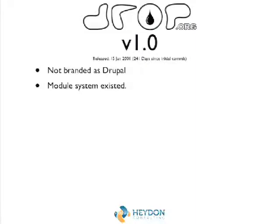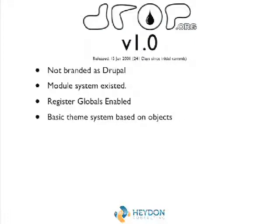Drupal 1 had the current module system that we've had right through to Drupal 7 — it's been added to but stayed pretty much the same, so module invoke all was there from the start. One bad thing: registered globals were enabled. In PHP, anything posted or put onto the GET string automatically came into PHP as a variable — very bad, and that was how we did things at the very beginning.